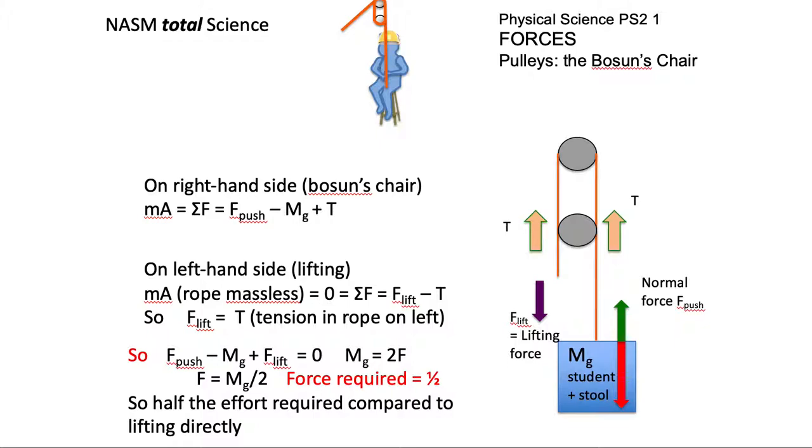So between them, we get the mass of the student and the stool. The gravity acting on it is going to be 2F, one half. So the force required is going to be one half.